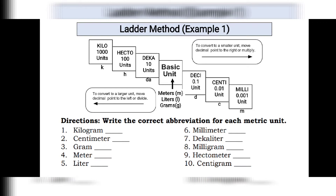Let us have a practice: write the correct abbreviation for each metric unit. For kilogram, combine the letter for kilo which is k and gram which is g, so kilogram is kg. Centimeter is cm, gram is simply g, meter is m, liter is l, millimeter is ml, decaliter is dal — don't be confused with deka and desi. Kapag desi, letter d; kapag deka, it's da. Milligram is mg, hectometer is hm, and centigram is cg.